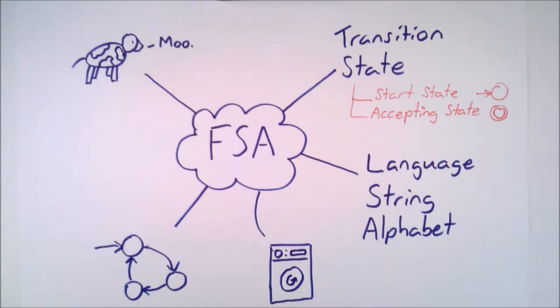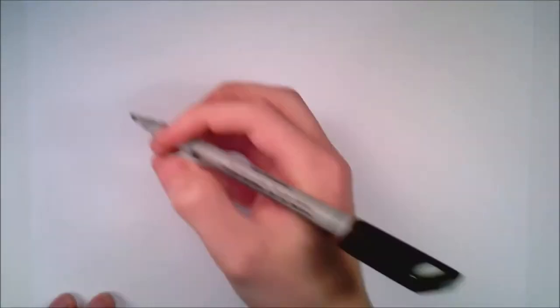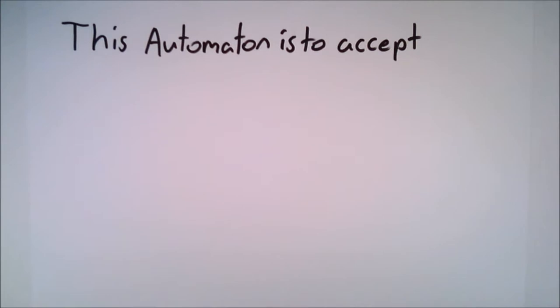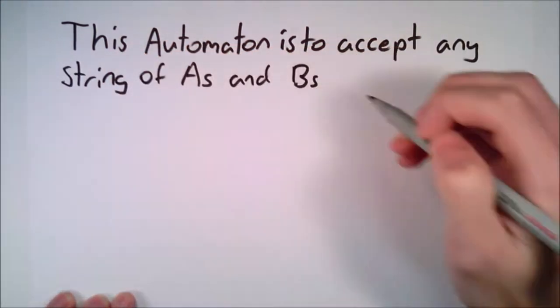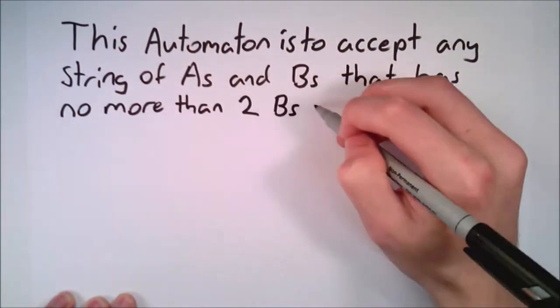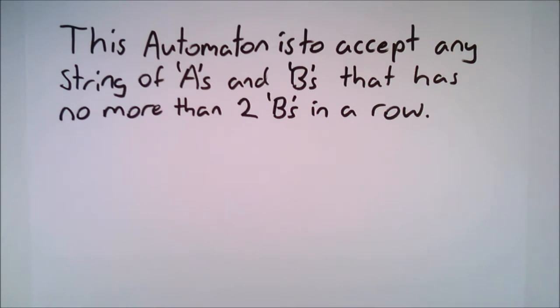First up, we need to define what we want this automaton to achieve. Let's go with this. This automaton is to accept any string of A's and B's that has no more than two B's in a row.